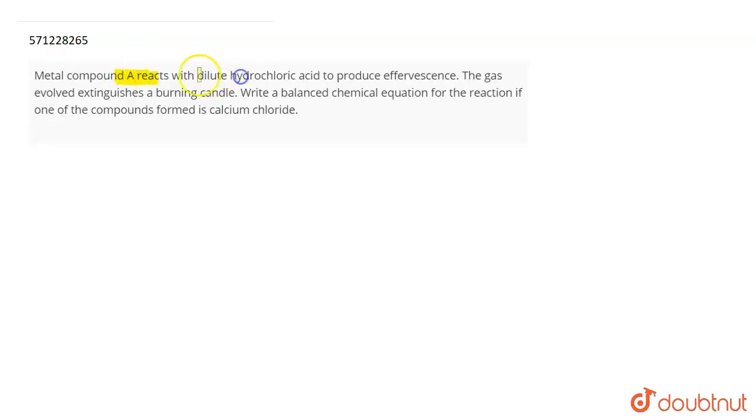The question is: metal compound A reacts with dilute hydrochloric acid to produce effervescence. The gas involved extinguishes a burning candle. Write a balanced chemical equation for the reaction if one of the compounds formed is CaCl2, which is calcium chloride.